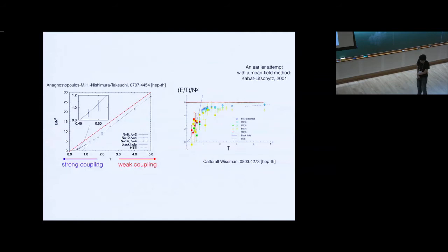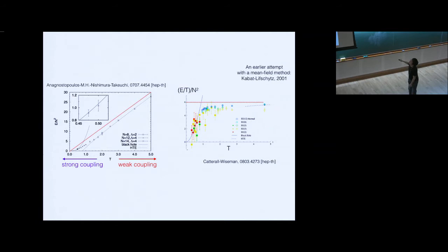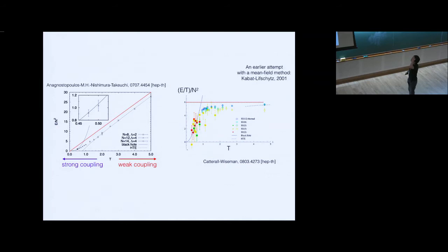We want to connect this high-temperature behavior and this low-temperature behavior by actually solving the theory in any parameter region — this is the zero-brane version of the three-quarter problem. There is a long history; we spent almost 10 years solving this. In 2007, I and Anagnostopoulos, Nishimura, and Takeuchi wrote a paper showing energy versus temperature: supergravity at low T and weak coupling at high T. The simulation result at high temperature agrees reasonably well with weak coupling, and gradually we see deviation approaching the supergravity result.